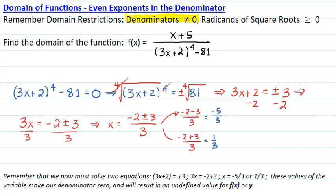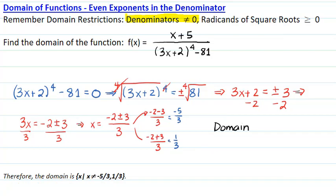Both of those values make our denominator zero and will result in an undefined value for f of x. Therefore, the domain equals all real numbers x except for negative 5 over 3 and 1 third.